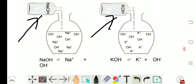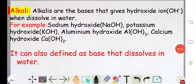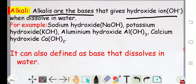...hydroxide ion, OH⁻ ion. From that figure, what we have discovered is the definition of an alkali. Alkalis are the bases that give hydroxide ion when dissolved in water — for example, sodium hydroxide, potassium hydroxide, aluminum hydroxide.